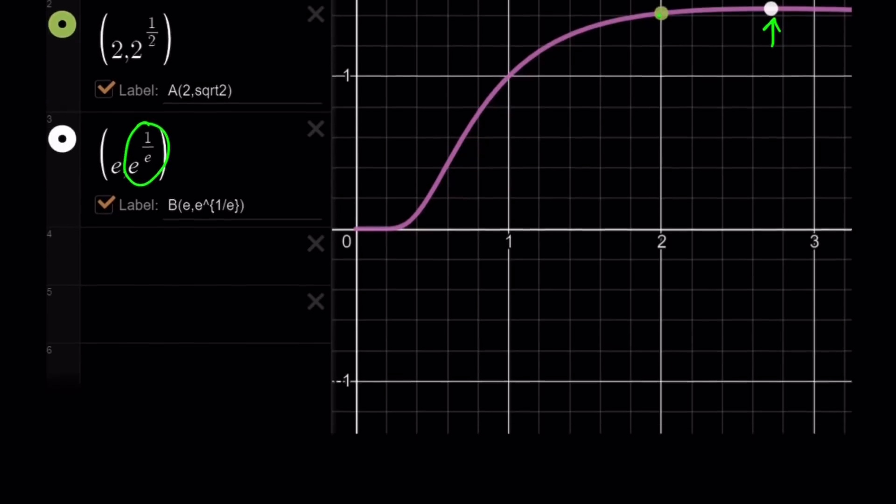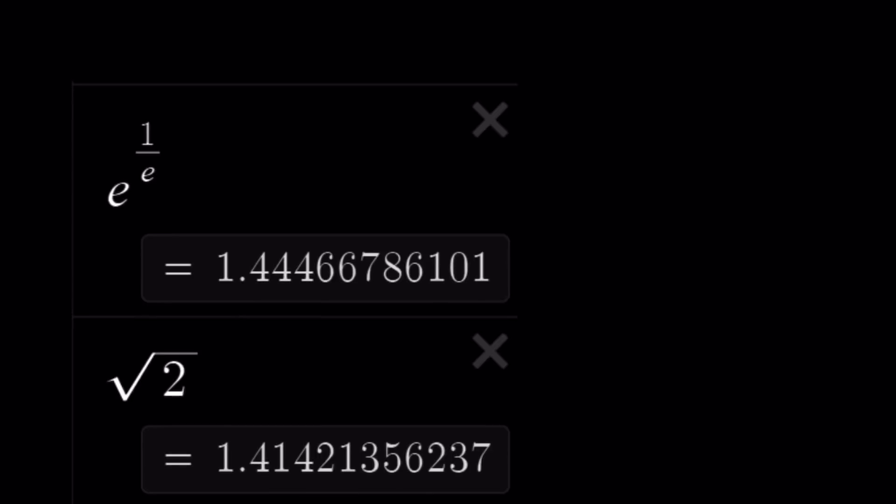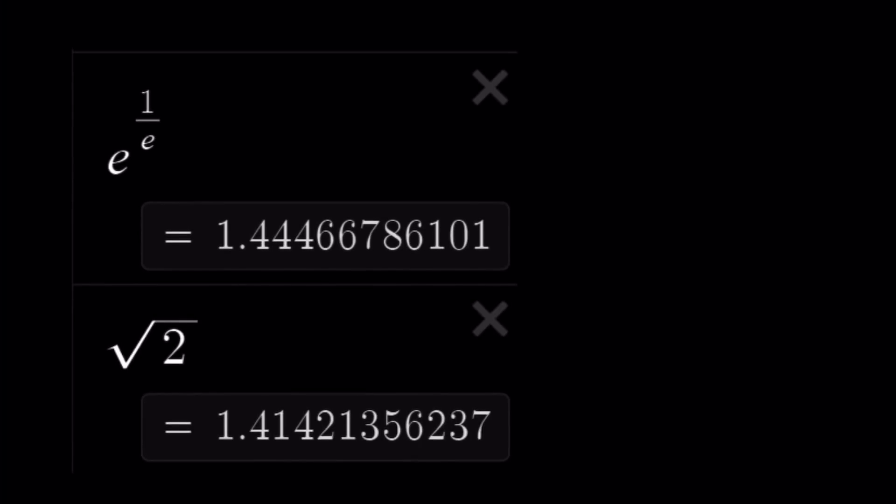Now, let's go ahead and look at the numerical values. And we're going to finish with that. So, e to the power of 1 over e happens to be this, and square root of 2, as you probably know already, at least a couple digits. And they're pretty close. Well, not bad. But e to power 1 over e wins the battle.